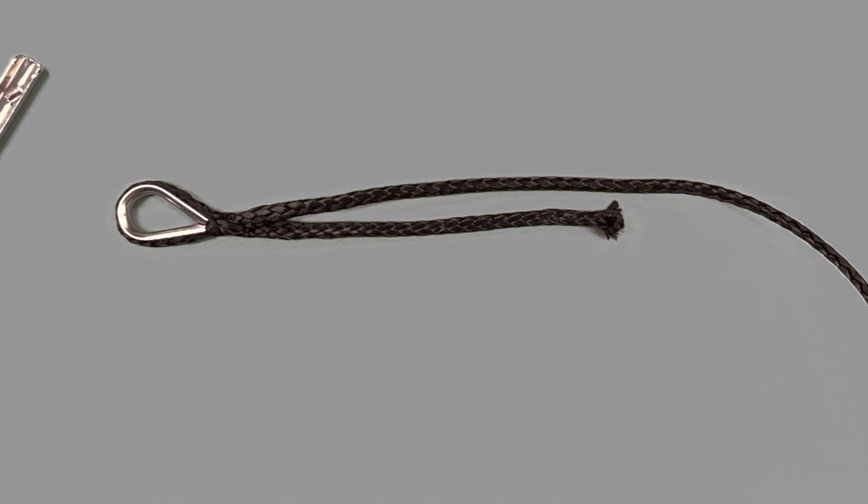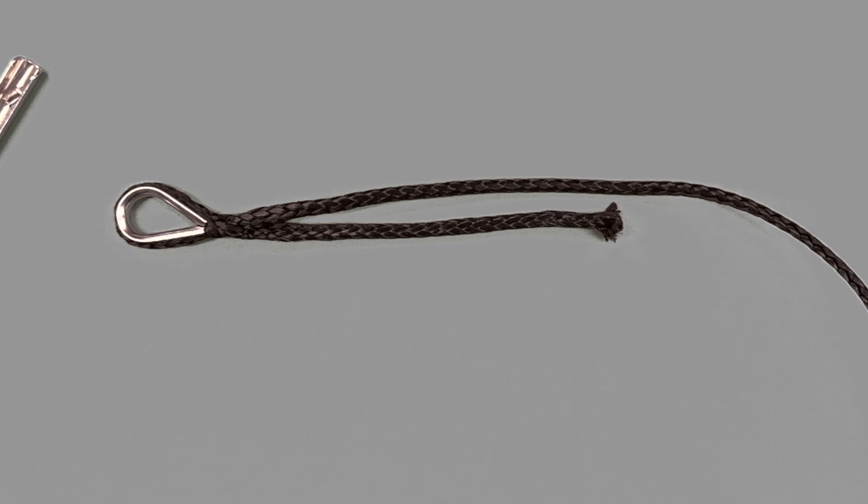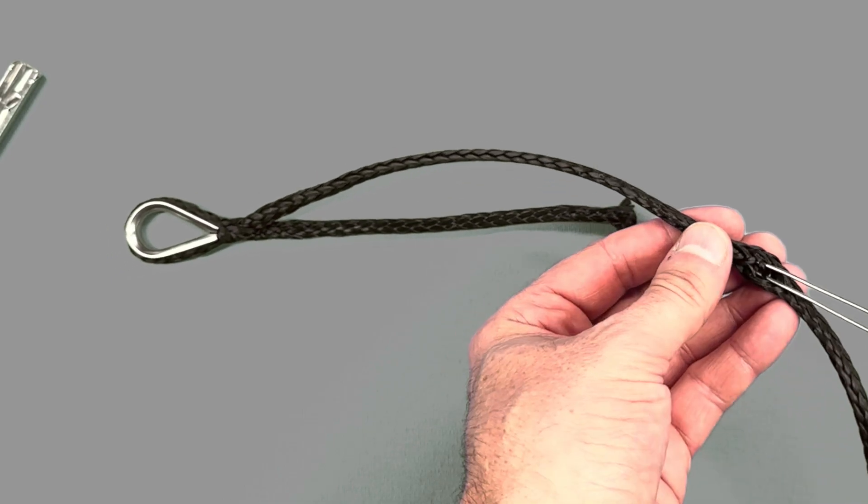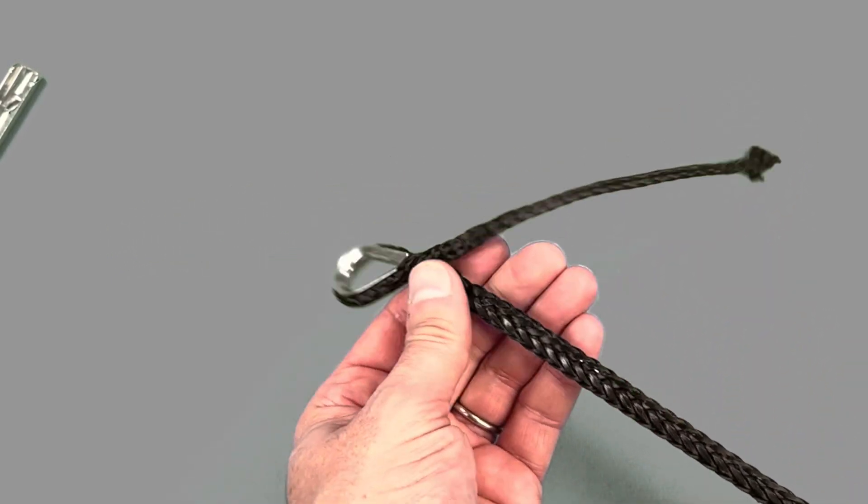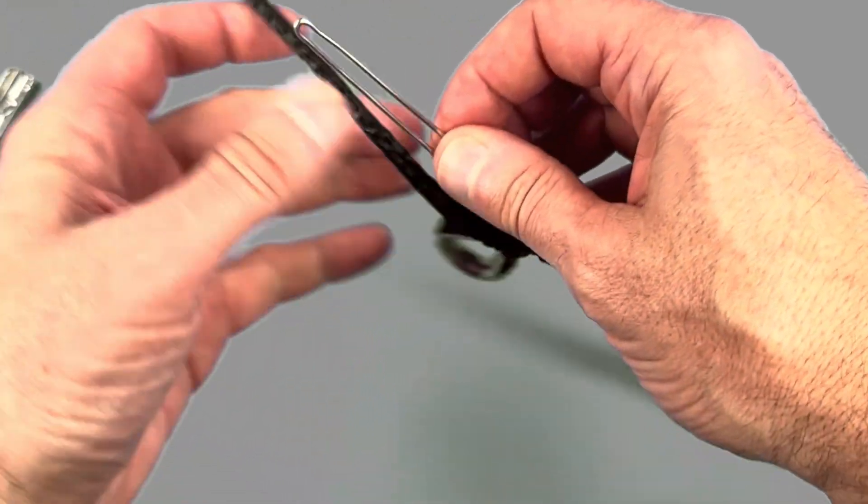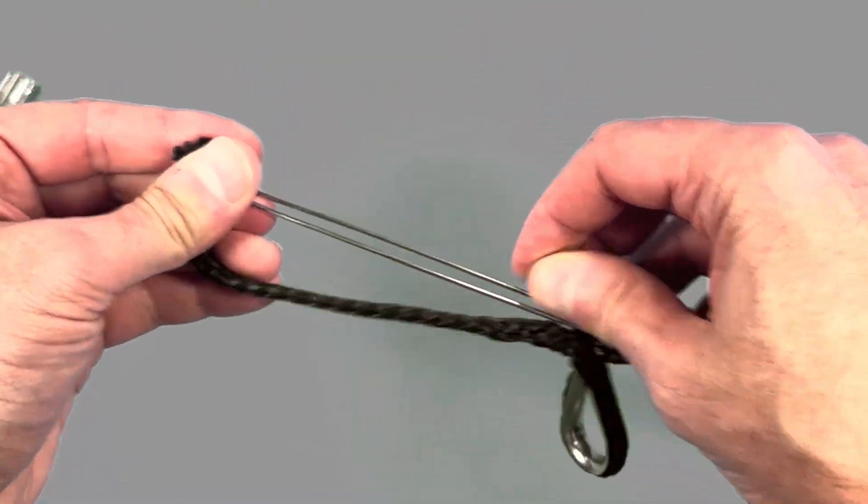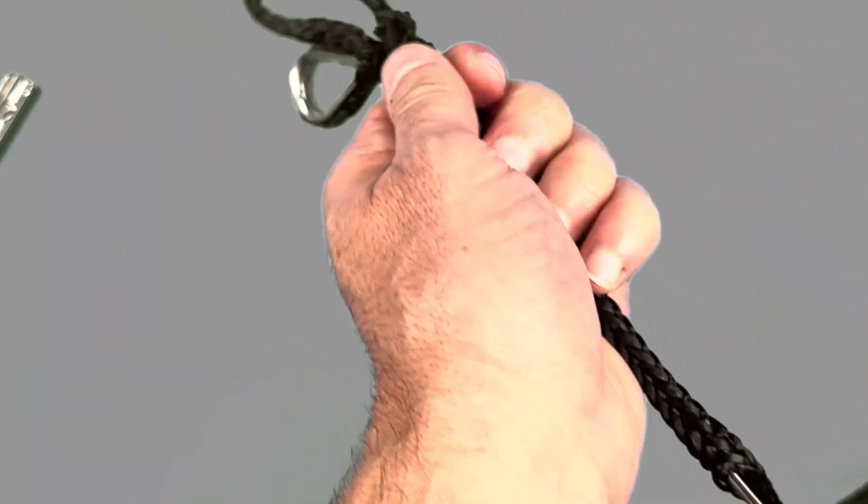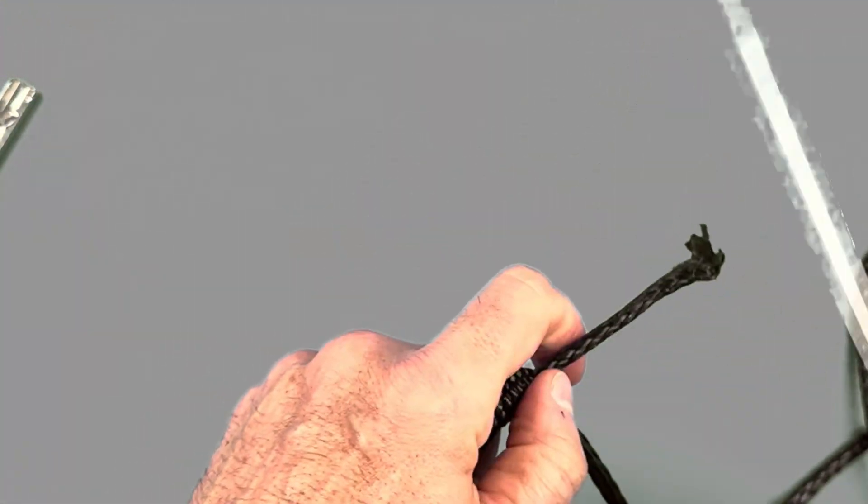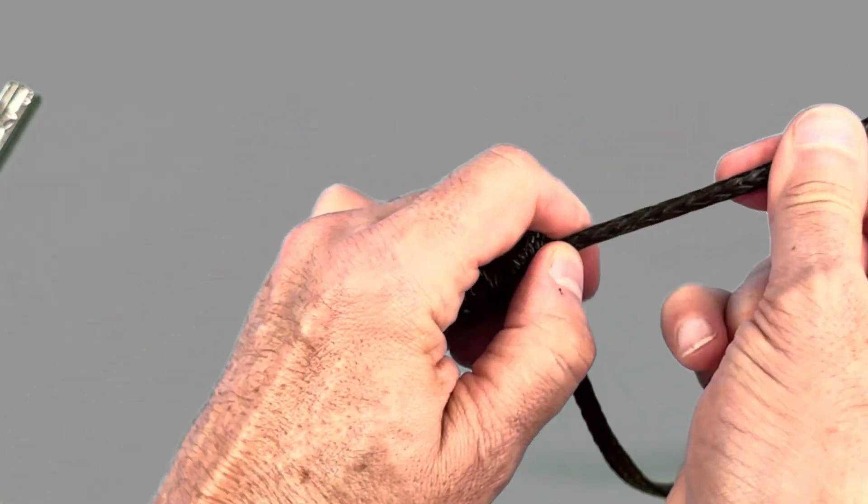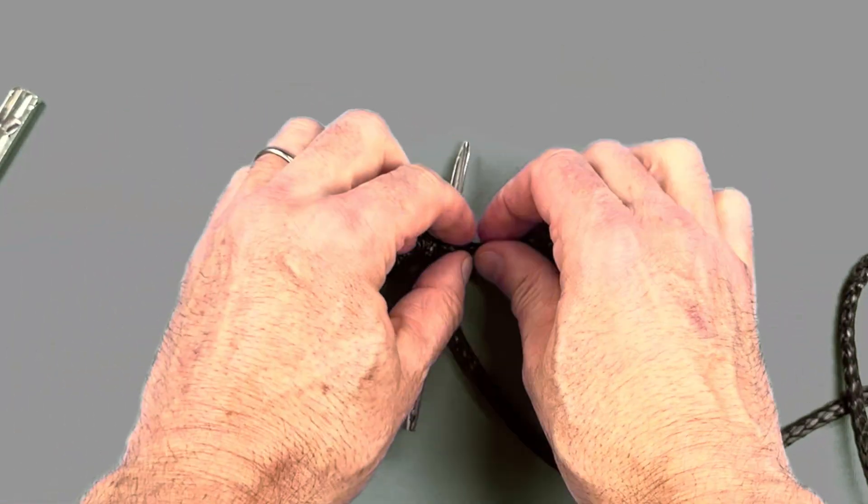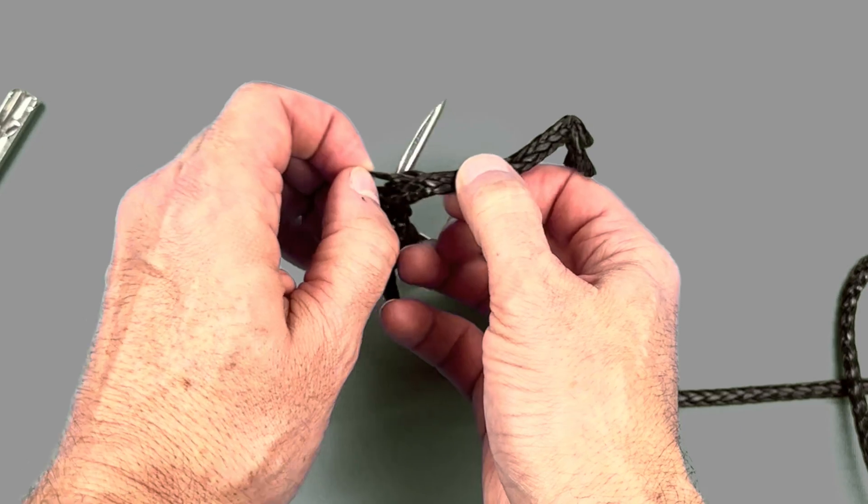And then the final step, as with the first, is to take your D-splicer starting a couple of inches up past where the working end is in the standing end. Slide it all the way through bringing it out as close to the top of the splice as possible. Taking the working end, slotting it in the end of your D-splicer, and then pulling it all the way through. Then giving the working end a tug, taking your smallest fid, and sliding it through to lock it in place so that we can complete that all important taper.